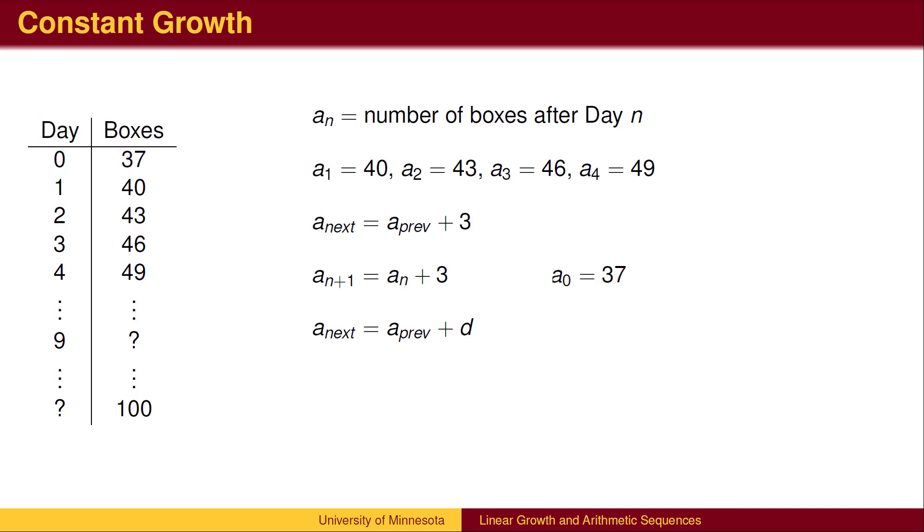This helps us find the explicit formula. To find the number of boxes on day 9, we merely need to add the shipments we received to the original 37. Since we received 3 boxes per day, we will have received 9 sets of 3, or 27 boxes by day 9, giving us a total of 64.